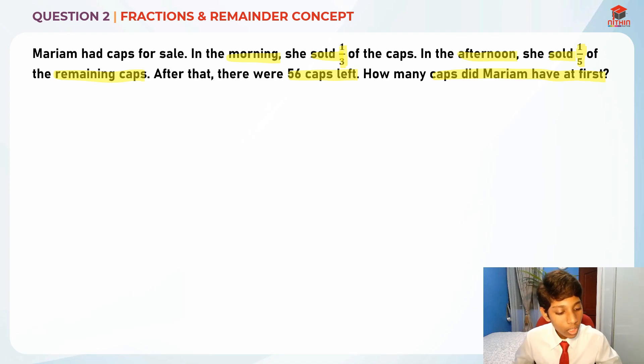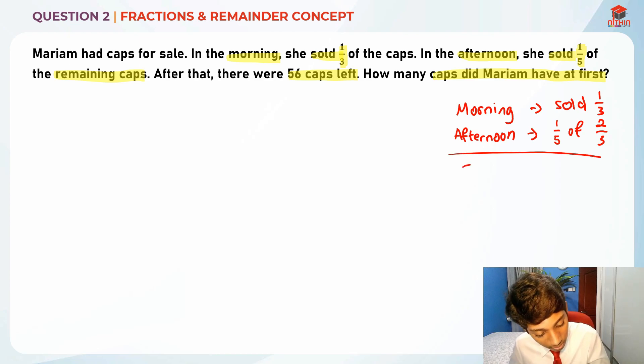The information they have given us is that in the morning she sold one third of her caps, while in the afternoon she sold one fifth of the remaining, so one fifth of two thirds, one fifth of the remaining caps.